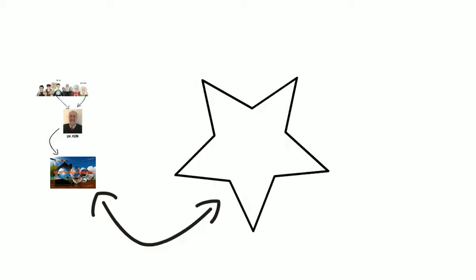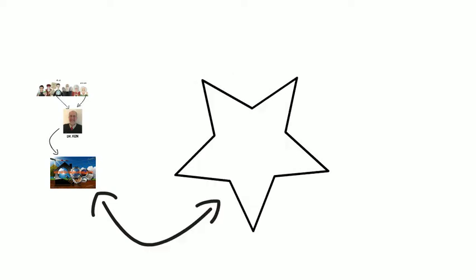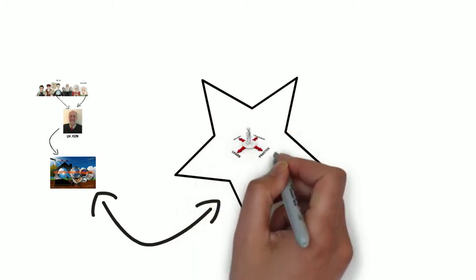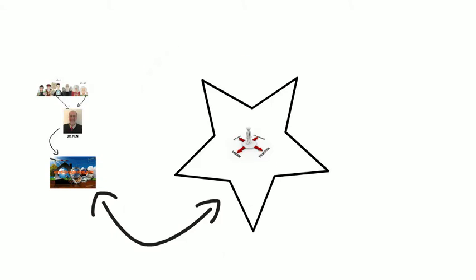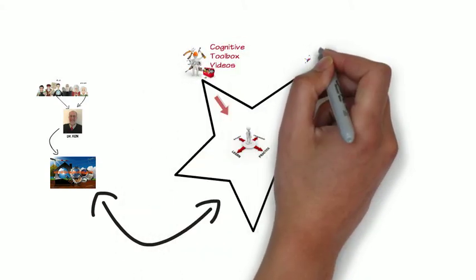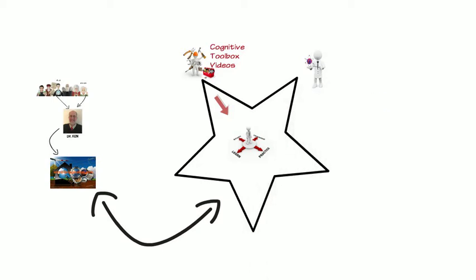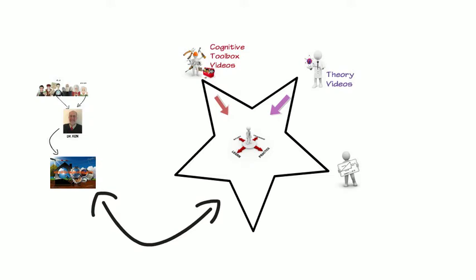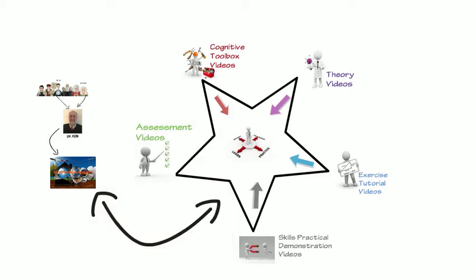Wired for Imagination has five elements and I've used a five point star as a metaphor with the student as the focus to explain this. The first element is the cognitive toolbox videos. The second is the theory videos. Element three are exercise tutorial videos. Number four are the skills practice demonstration videos. And finally element five are our assessment videos.